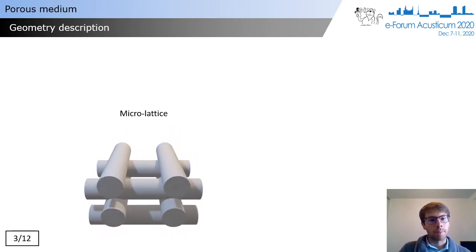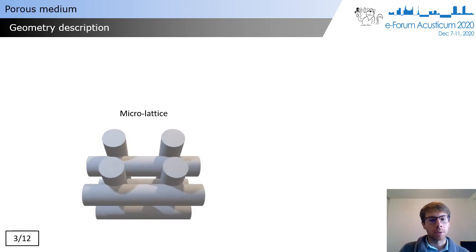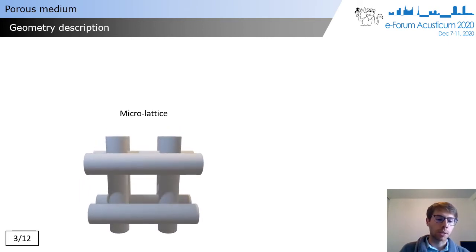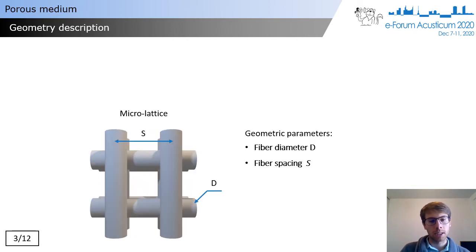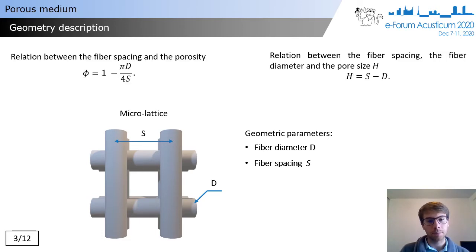Let's start with the porous materials we are considering. This is what we call a micro-lattice. The geometry is very simple to describe because it is just described by the diameter of the fibers and the spacing of the fibers. There is also a very simple relation between the diameter of the fibers, the spacing of the fibers, and the porosity shown on the left of the screen. The pore size is also very simple to describe.